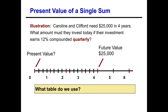Let's look at an example of compounding quarterly. Caroline and Clifford still need $25,000 in four years — the same problem as before — but now their investment earns twelve percent compounded quarterly. This is still a present value lump sum question, but now we need to adjust our periods and interest rate. Compounded quarterly means four times per year, so four years times four quarters gives us sixteen periods. The twelve percent annual rate divided by four quarters per year gives us three percent per period.